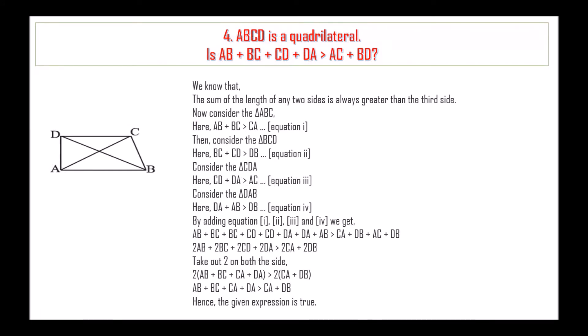Next, fourth question: ABCD is a quadrilateral. Is AB plus BC plus CD plus DA greater than AC plus BD? We know that the sum of the length of any two sides is always greater than the third side.